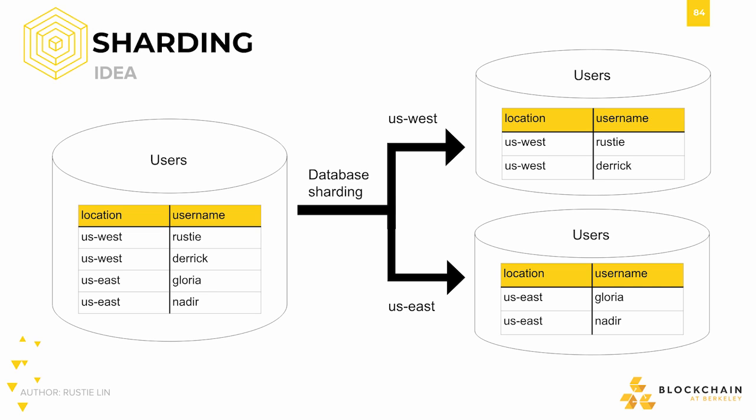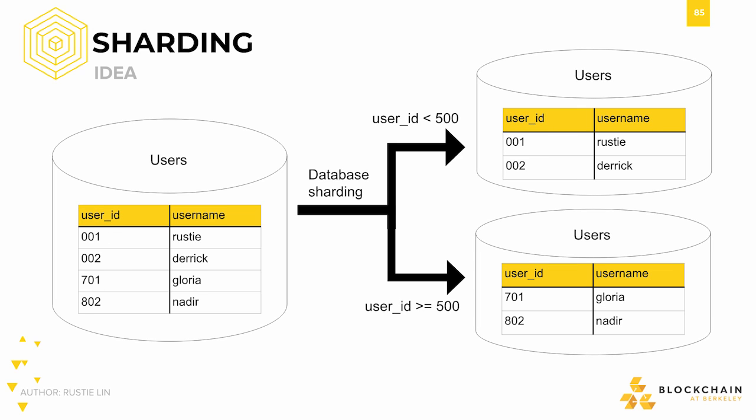You can imagine these individual nodes in different availability areas. For example, if you're designing a social media platform, chances are the majority of the average user's connections are within the same general geographic area. So you could store all the data for users on the West Coast in your West Coast data center, and the same for the East Coast, Midwest, or any other general area. More generally, if you don't have any information about users' geographic location, you could also distribute data based on an arbitrary key. In this diagram, we have the same data, but partitioned across our shards, not based on location, but on the user's ID.